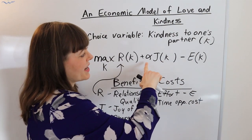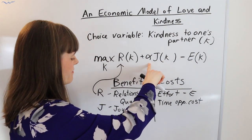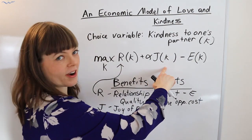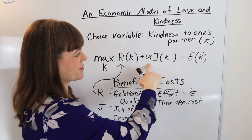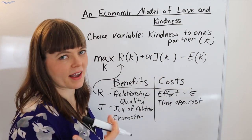Now you noticed that I placed an importance weight in front of the benefit joy for partner. And the reason I did that is this importance weight is a good way of modeling altruism.